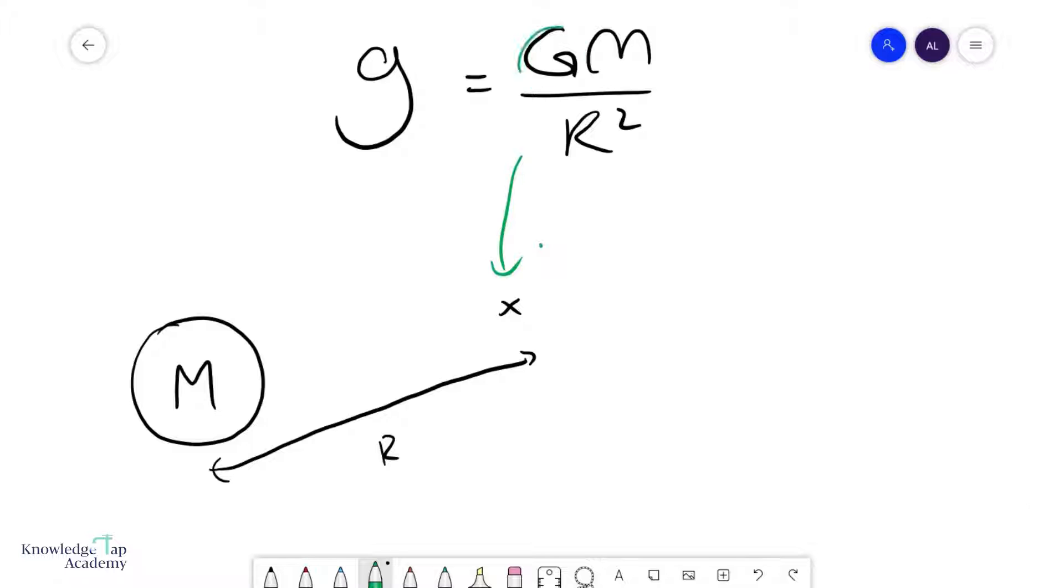So G, this G over here is the gravitational constant, which equals 6.67 times 10 to the minus 11. And I'll simply multiply it by this mass and divide it by the square of this distance. Very simple.